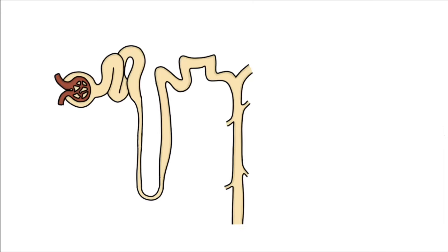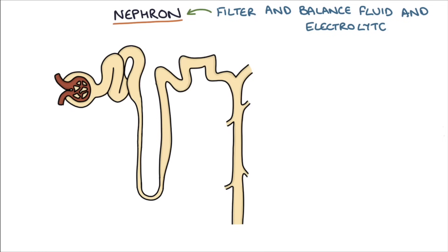So let's go through the mechanism of action. Firstly, in order to understand how loop diuretics work, we need to have a basic understanding of some of the functions of the kidney. The kidney is made up of about one million tiny tubes called nephrons, and these nephrons are responsible for filtering and balancing fluid and electrolytes between the blood and the urine.